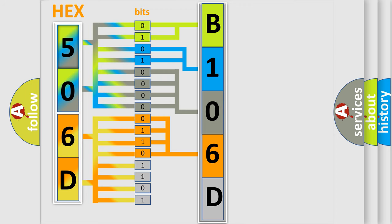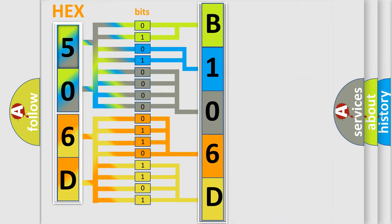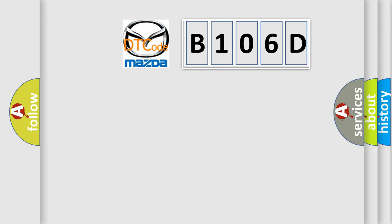A single byte conceals 256 possible combinations. We now know in what way the diagnostic tool translates the received information into a more comprehensible format. The number itself does not make sense to us if we cannot assign information about what it actually expresses. So, what does the diagnostic trouble code B106D interpret specifically?